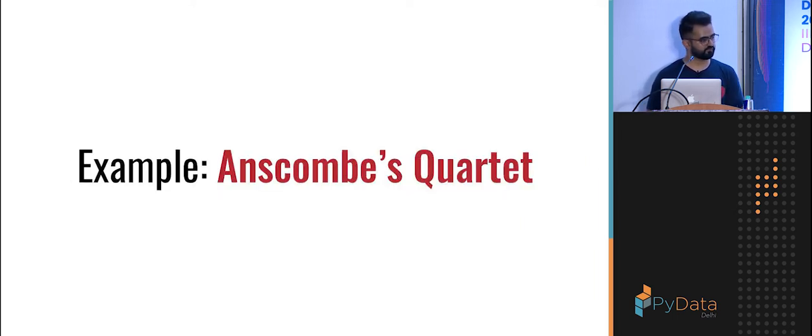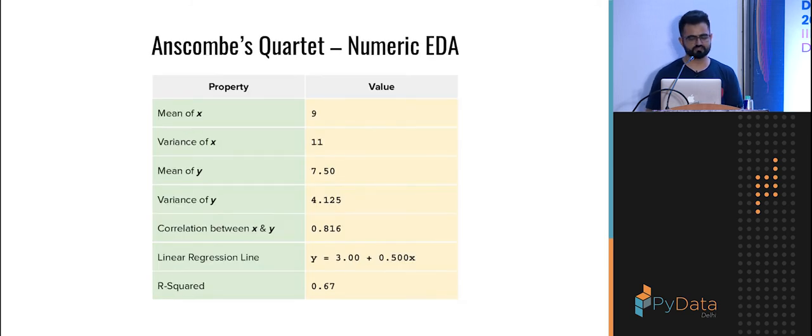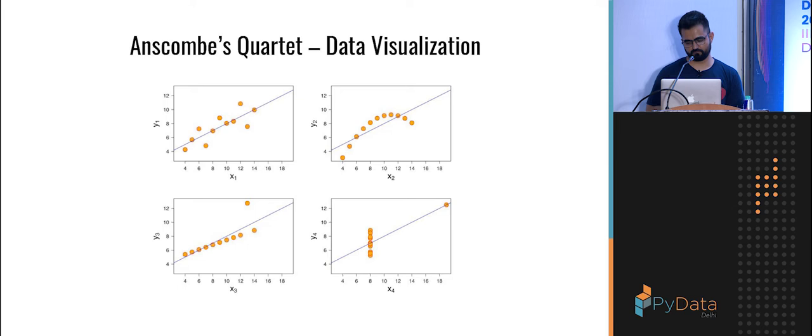And to understand why I chose data visualization, let's look at this very classic example. Here are some datasets. So I've just colored them so that you can separate them out. The data is not important. What is important is when I do quantitative analysis, the mean, variance, correlation, regression line, and R square all turn out to be the same for all four datasets. So either that means the data is same, it will exhibit similar behavior. But when I visualize that, I find there is some difference. Clearly visualization can help me uncover patterns as well.